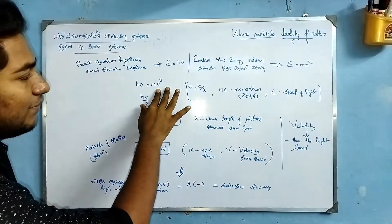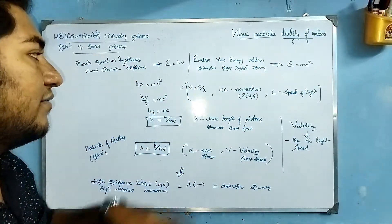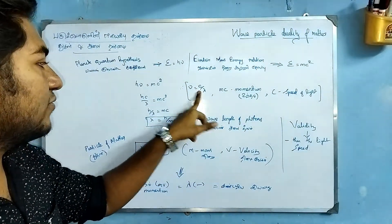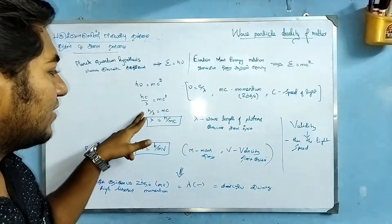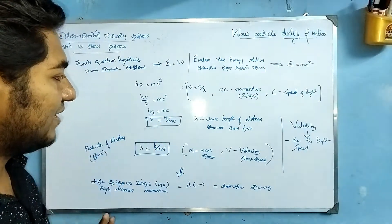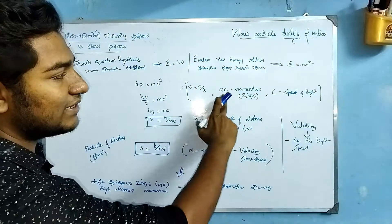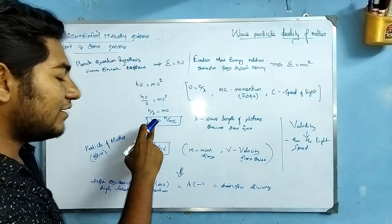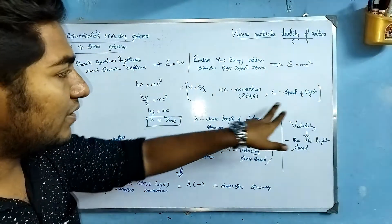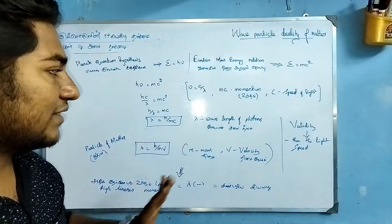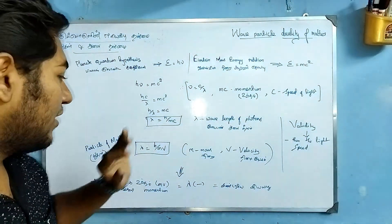Now h times nu is equal to mc squared. We use the relation: nu is equal to c divided by lambda. So substituting c by lambda — h times (c/lambda) equals mc squared. When we cancel c on both sides, h divided by lambda equals mc. Then lambda equals h divided by mc. This is the de Broglie wavelength. Here mc is the momentum, c is the speed of light, and lambda is the wavelength of the photon.